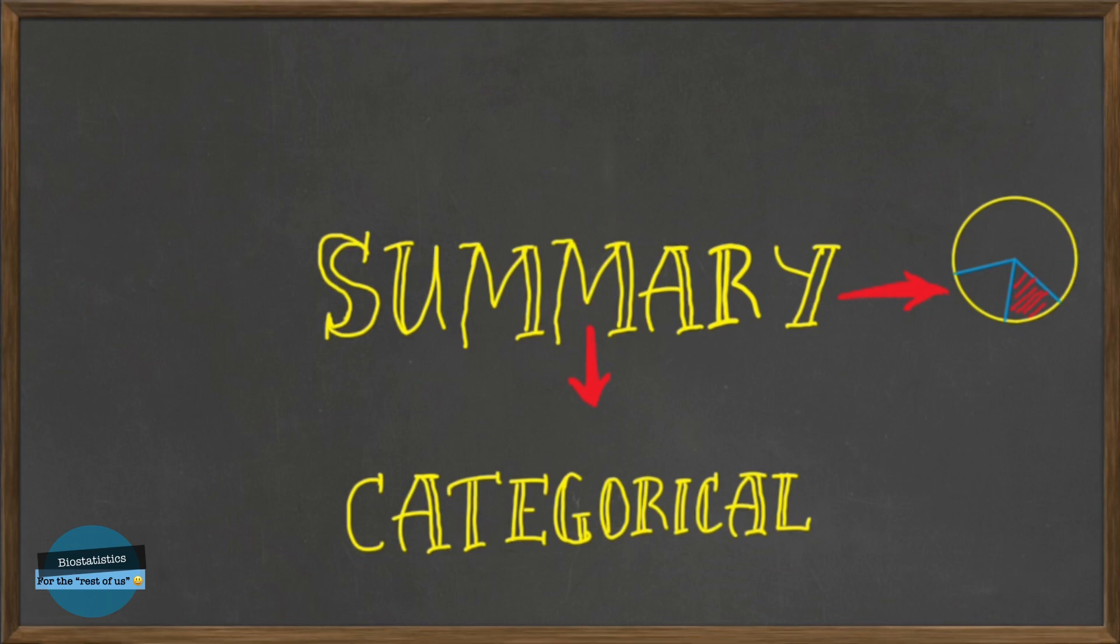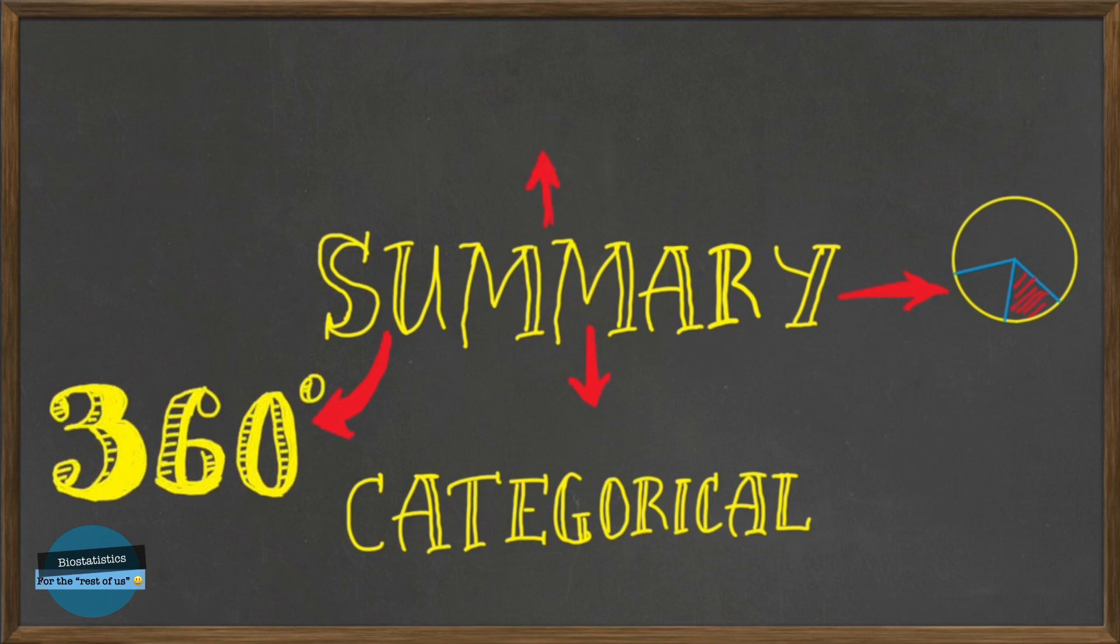And when drawing a circle graph, remember that a circle has 360 degrees. And it's better to start at 12 o'clock and then go clockwise.